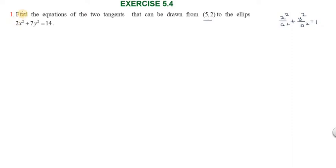Hi students, greetings from Success Education Academics. This is 5.4, question number one: find the equation of the two tangents that can be drawn from (5, 2) to the ellipse 2x² + 7y² = 14.